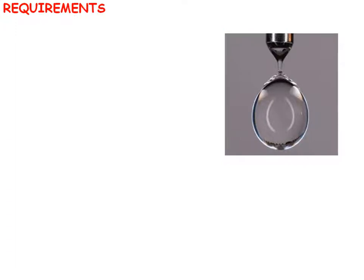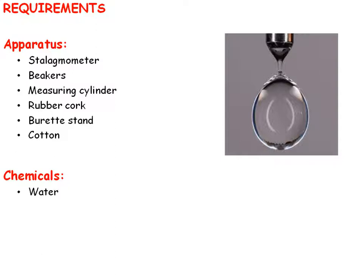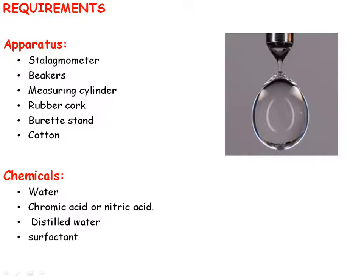Requirements to conduct this practical: first we will see the apparatus — stalagmometer, beakers, measuring cylinder, rubber cork, burette stand, and cotton. Then chemicals required: water for washing, chromic acid and nitric acid for cleaning the stalagmometer before use, distilled water for preparation of different dilutions of surfactant, and lastly the surfactant itself.